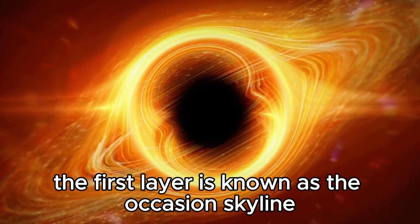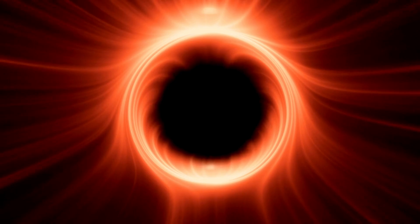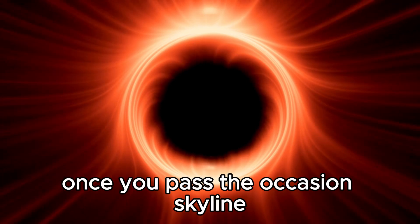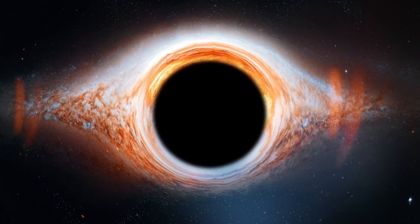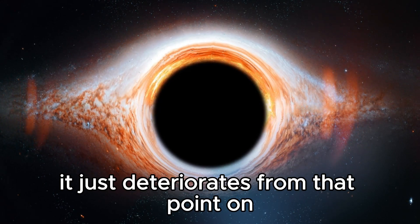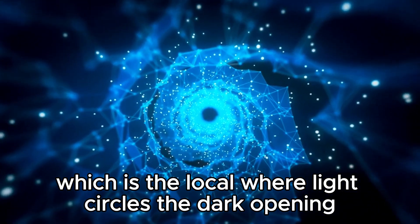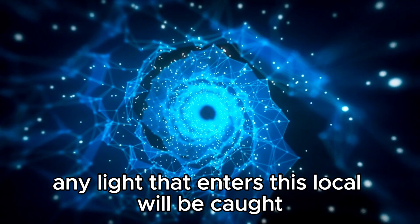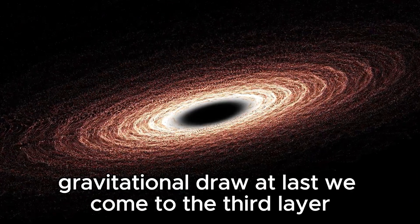The first layer is known as the event horizon, which is the point of no return. Once you pass the event horizon, there's no option but to press onward and you will be sucked into the black hole. The second layer is the photon circle, which is the region where light orbits the black hole. Any light that enters this region will be trapped and cannot escape the black hole's gravitational draw.